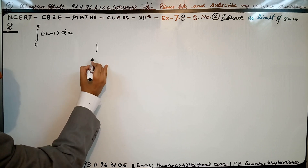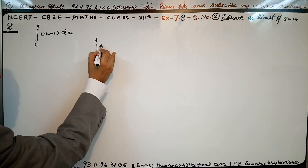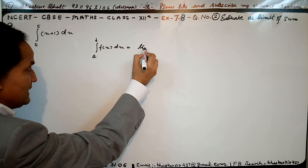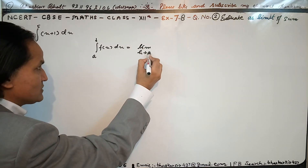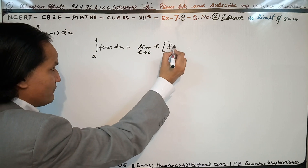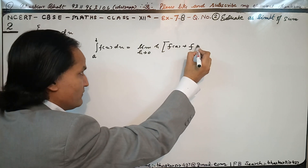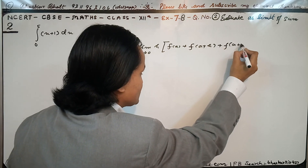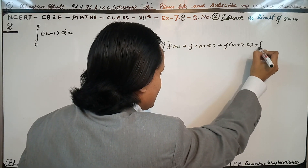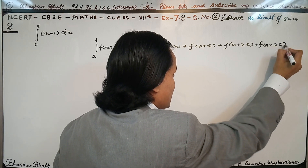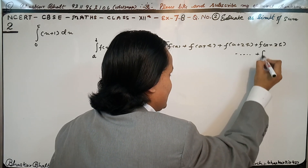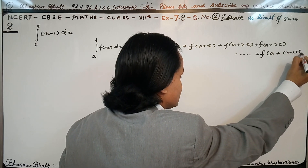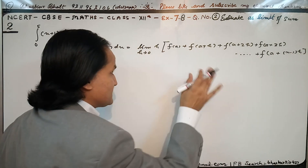The limit of sum is defined as: the integral from a to b of f(x) dx equals the limit as h tends to 0 of h times [f(a) + f(a+h) + f(a+2h) + f(a+3h) + ... and finally f(a + (n−1)h)]. This is the definition.